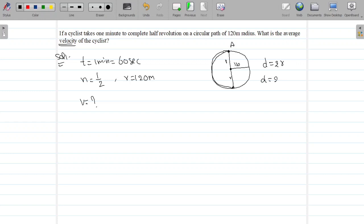What is the diameter? 2 into 120. D equal to 240 meters. Displacement is 240.